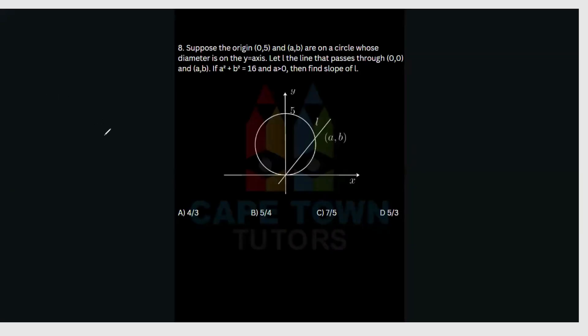The next question says: suppose the origin (0,0), point (0,5), and point (A,B) are on a circle whose diameter is on the y-axis. Let L be the line that passes through (0,0) and (A,B). If A squared plus B squared equals 16, and A is greater than 0, then find the slope of L.